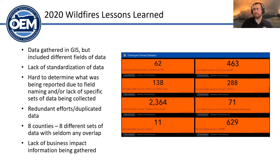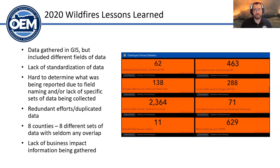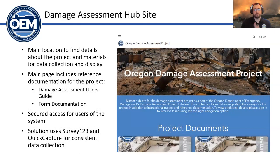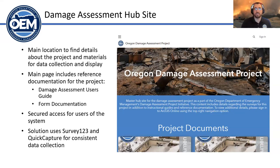A lot of stuff was happening — a lot of different data. The good news is GIS data sets can be thrown onto a map, but there were missed opportunities in not having data consistently across the state. To address that, it starts with having a landing page — where do people go to find information about this solution? We built and designed a damage assessment hub site that talks about the Oregon Damage Assessment Project.